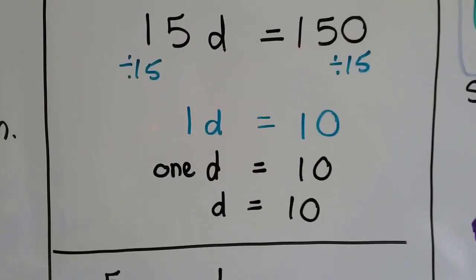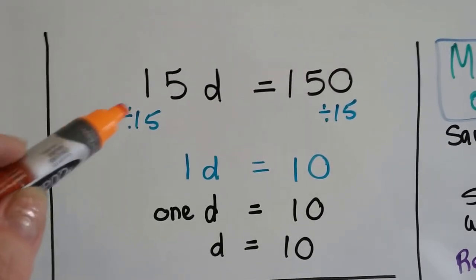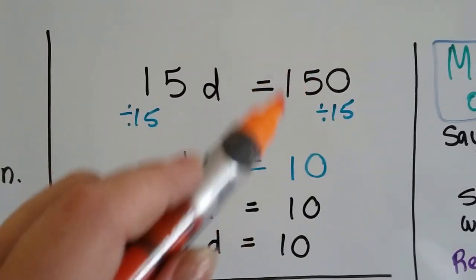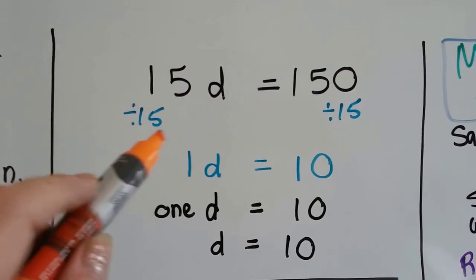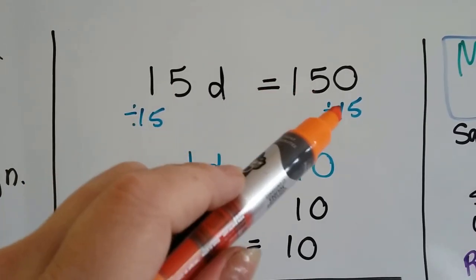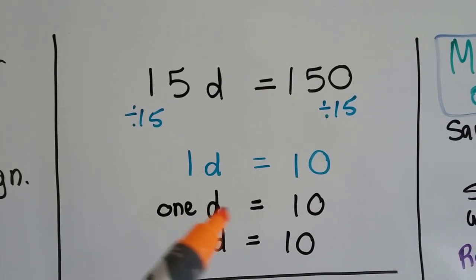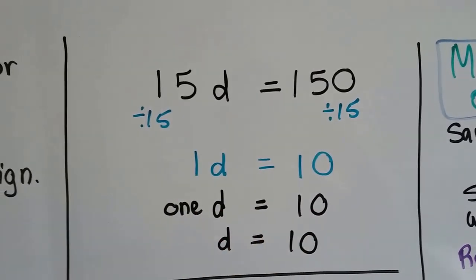Alright, if we have 15d equals 150, we can divide both sides by the 15 to isolate the d. 15 divided by 15 is 1. 150 divided by 15 is 10. So we know that the 1d is equal to 10, or d is equal to 10.